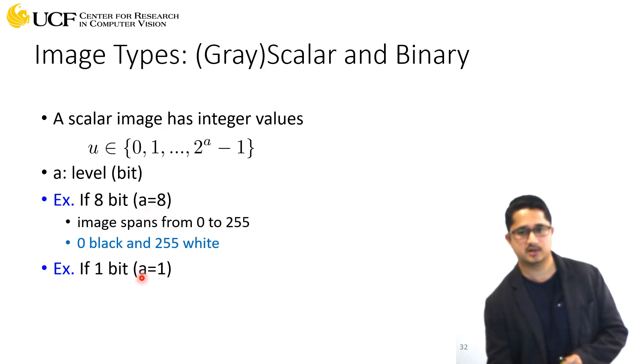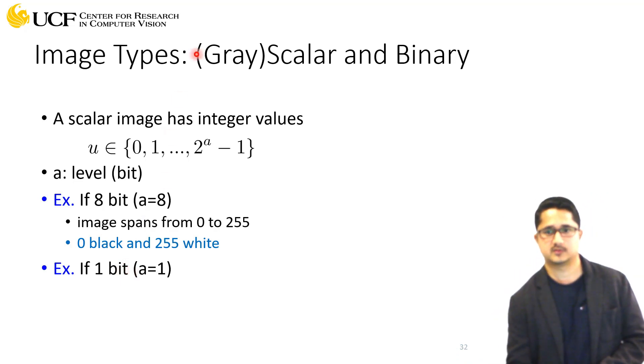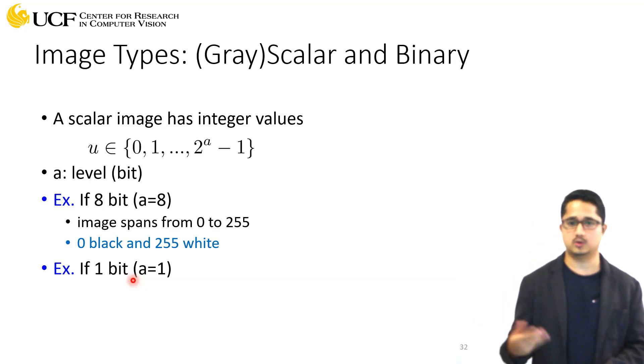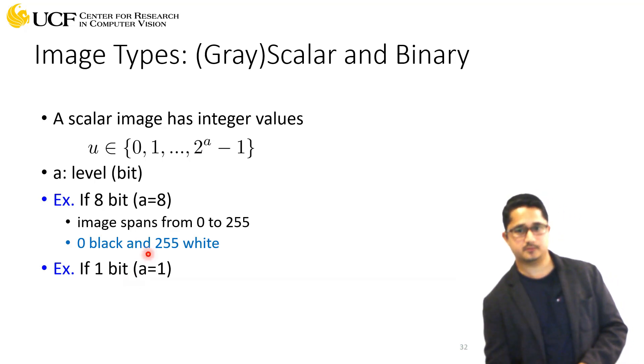If 'a' equals one, this is called a one bit image. Using a=1 in this equation, the only possible values are zero and one. The pixels will be either zero or one, making it a binary image because you only have two values.